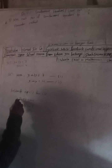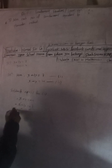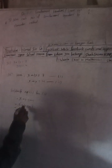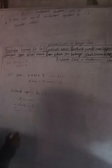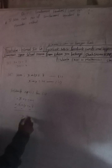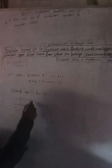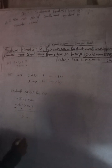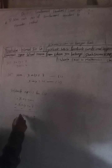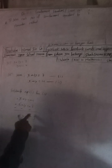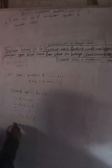Now, plus x and minus x cancel out. And plus y minus 2y gives minus y. And minus 7 plus 4 gives minus 3. So minus y equals minus 3, and the two minuses cancel. Therefore y is equal to 3.